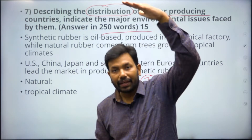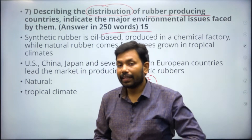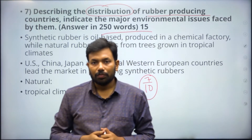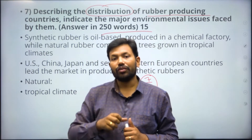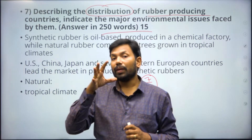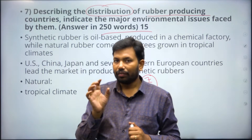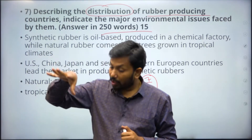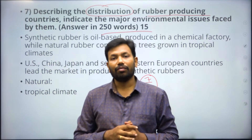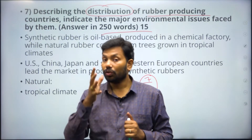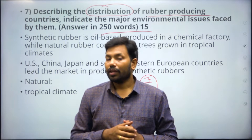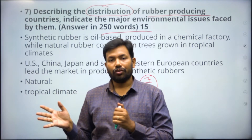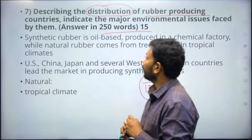Rubber cultivation is found in the equatorial region, roughly between 5° North and 5° South latitude. These areas have ample rainfall, dense vegetation, and sufficient sunlight — rubber trees are shade-loving but still need sun. Water should not be stagnant, and acidic mountain soils are suitable. We are focusing on natural rubber, not synthetic rubber.